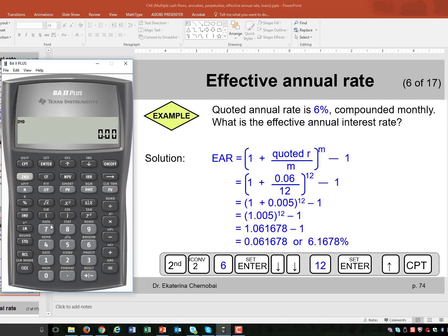So you press 2nd, 2. The nominal rate is 6%. You put 6, enter. Press the down arrow key or up arrow key, either one. Stop when you see compounding per year.